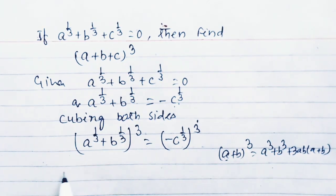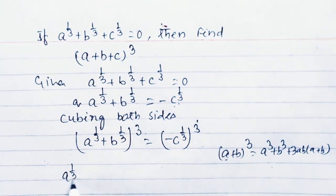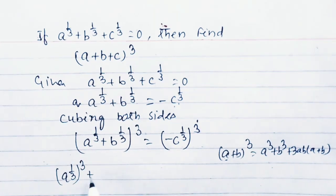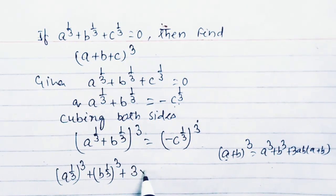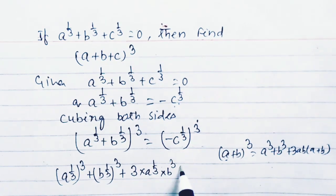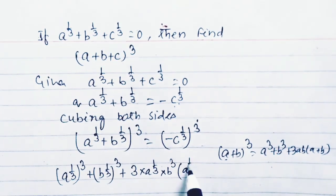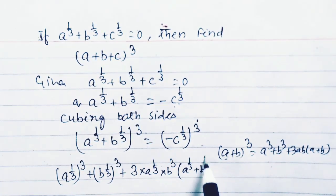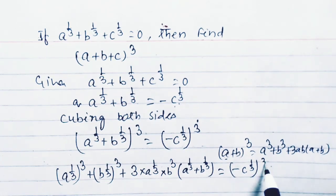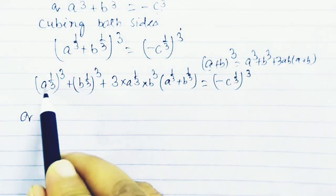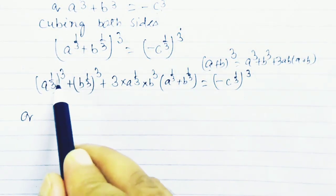By using this formula we can write: a to the power 1 by 3 whole cube plus b to the power 1 by 3 whole cube plus 3 times a to the power 1 by 3 times b to the power 1 by 3 times a to the power 1 by 3 plus b to the power 1 by 3, equals minus c to the power 1 by 3 cubed.